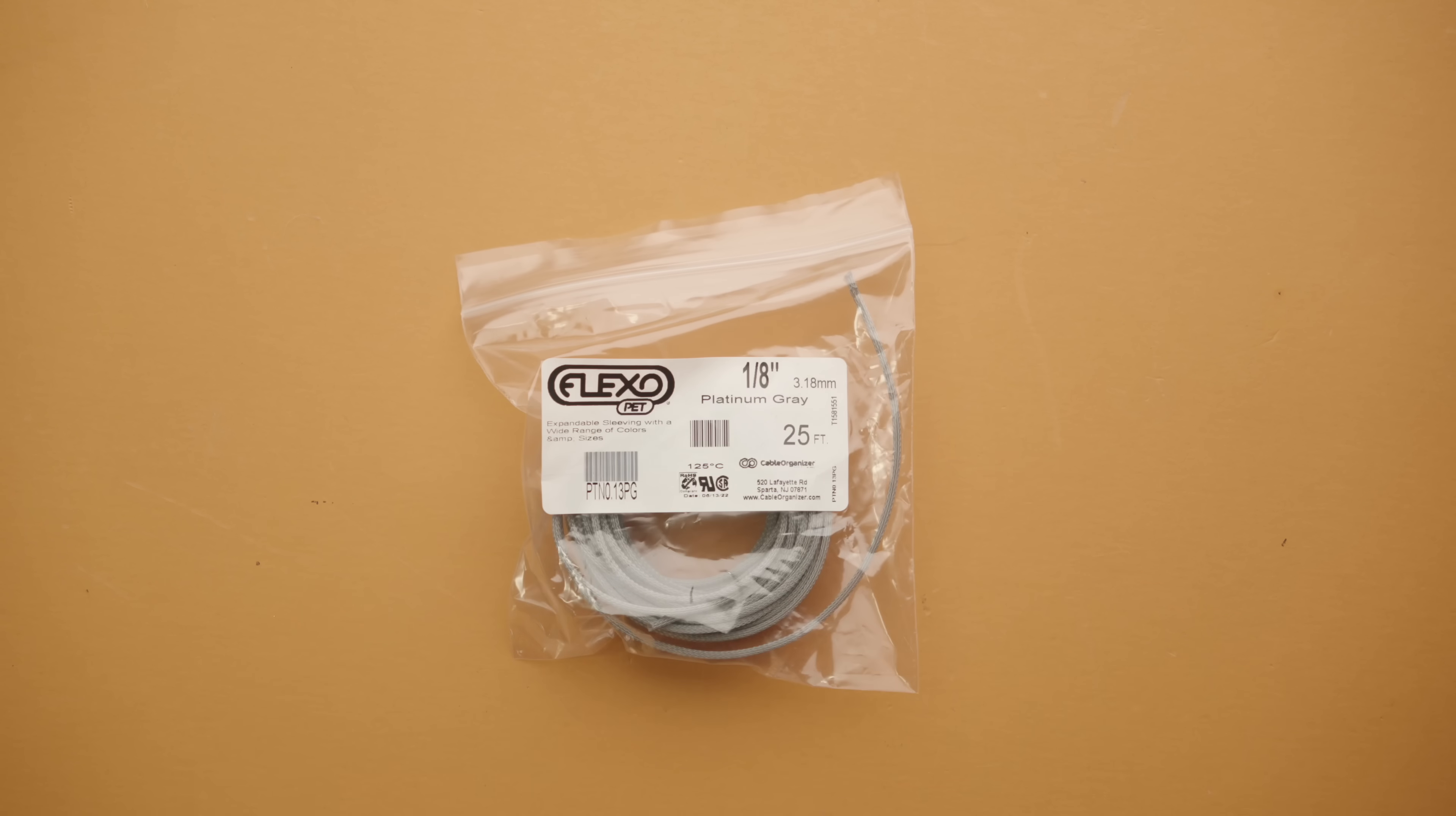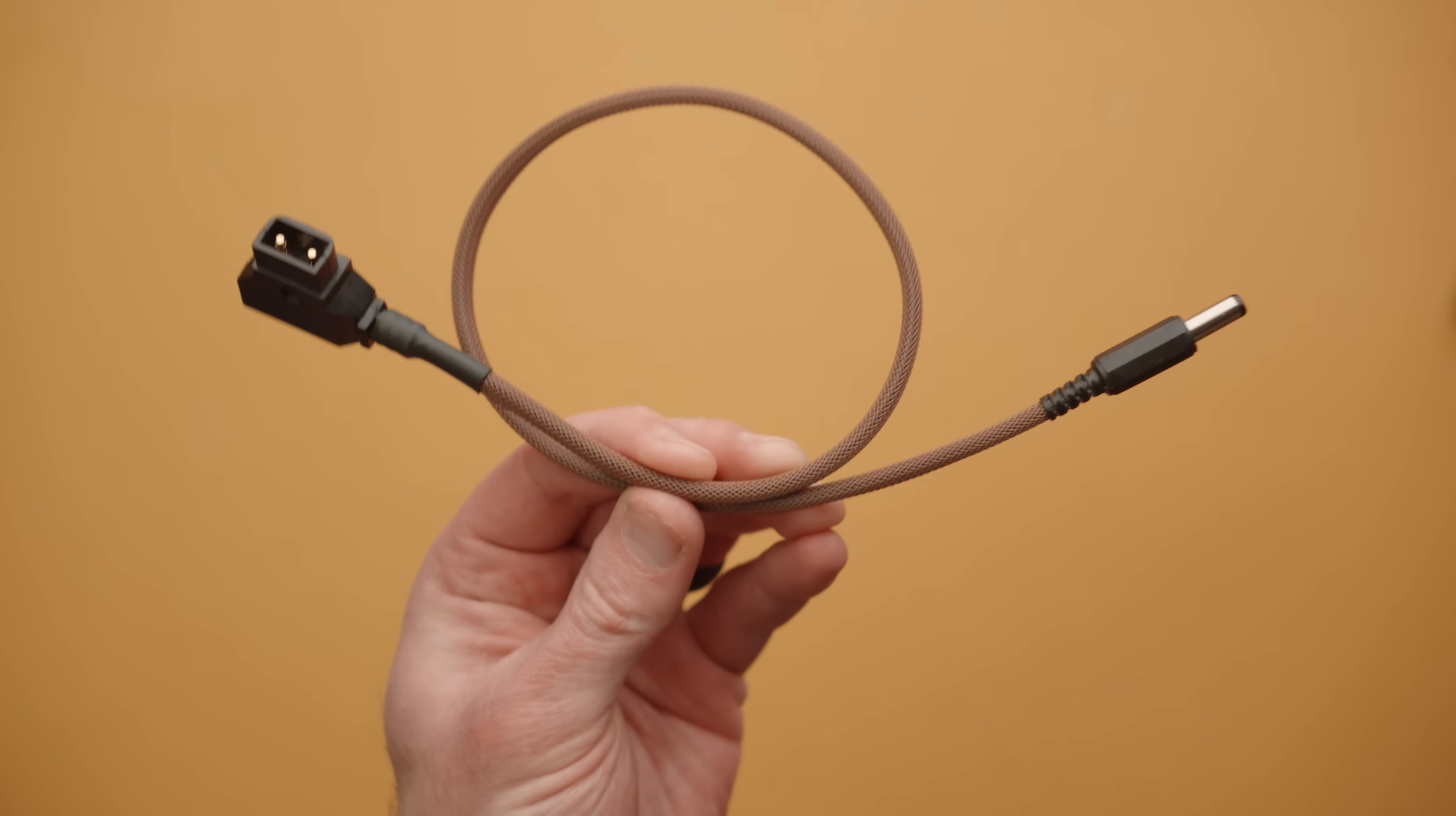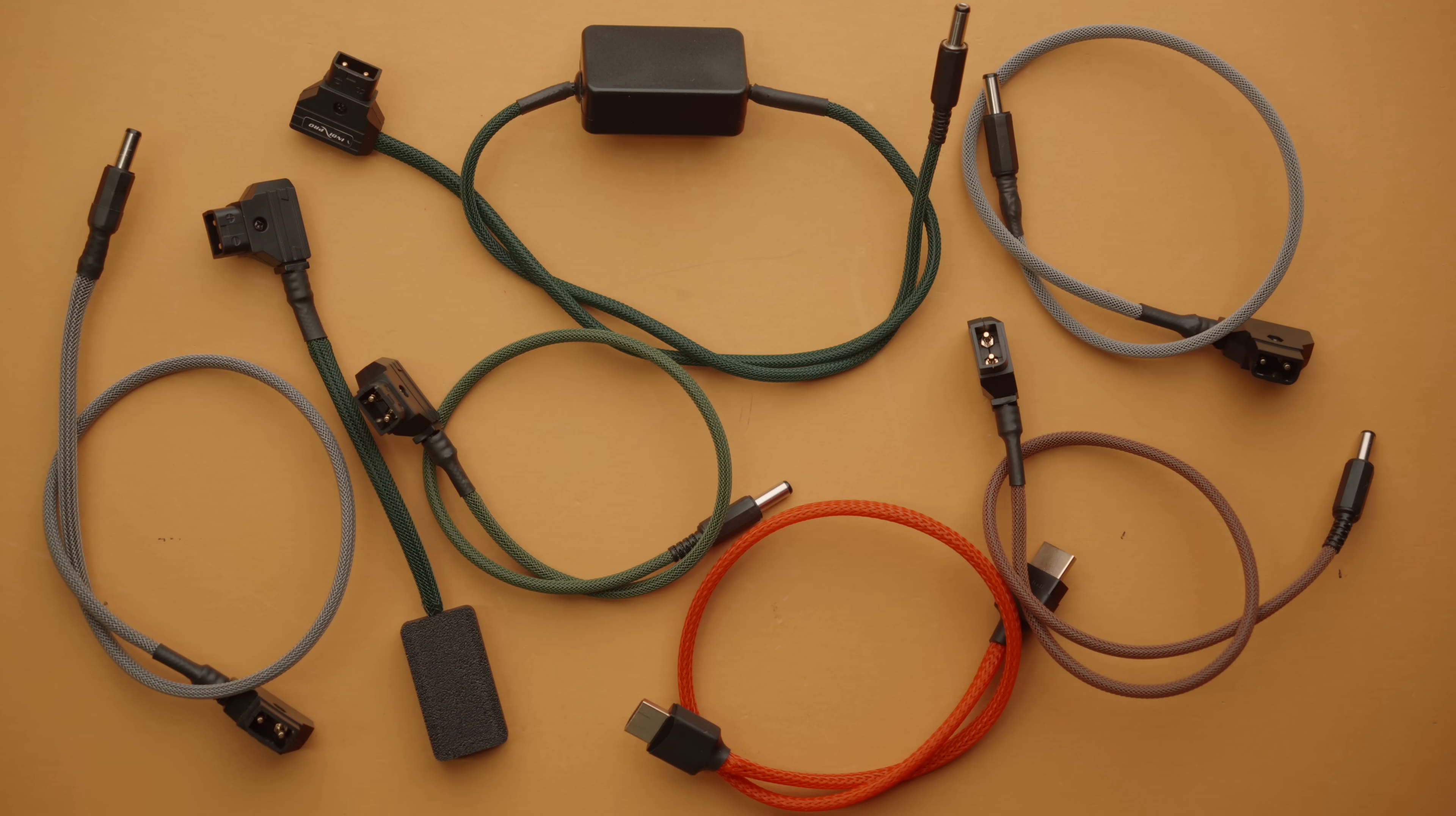The next thing you'll need is some kind of cable sleeving. So far, I've had great results with the Flexo PET line. There are several different sizes and different colors. I found eighth inch to work with most cables. But if you're going to change the color of existing cables like XLR or HDMI cables, you might want to go with something a little larger.